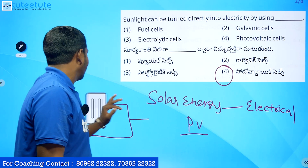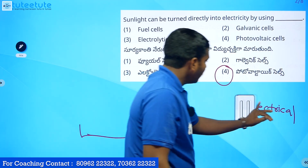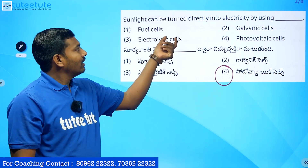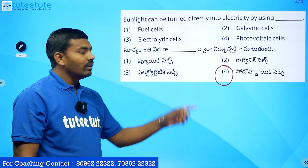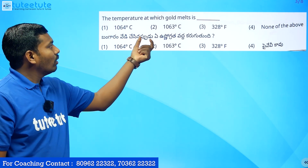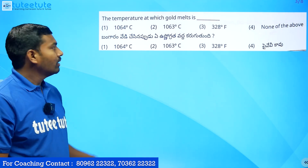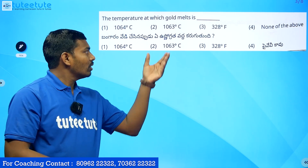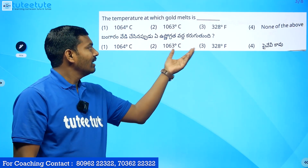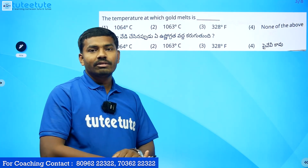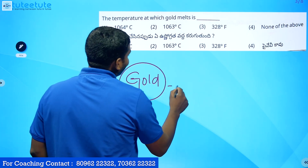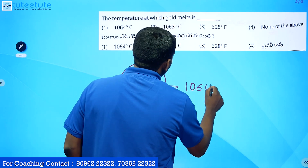If you look at the depth model, there is a lot of depth, but this is a direct question. So the answer is: sunlight can be turned directly into electricity by using a photovoltaic cell. Next question: the temperature at which gold melts. The melting point of gold. The options are 1064, 1063, 328, and 555. The melting point of gold is 1064 degrees Celsius.